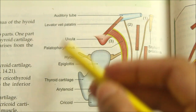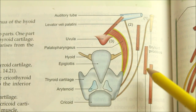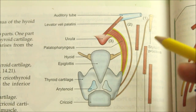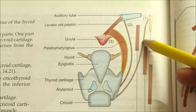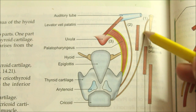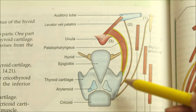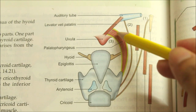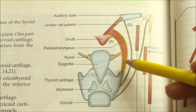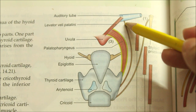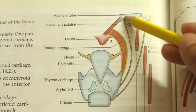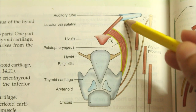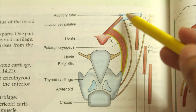Now let's learn about the longitudinal muscle coat of the pharynx. The pharynx has three muscles that run longitudinally. First is the stylopharyngeus, which arises from the styloid process. Second is the palatopharyngeus, which descends from the sides of the palate. Third is the salpingopharyngeus, which descends from the auditory tube to merge with the palatopharyngeus.